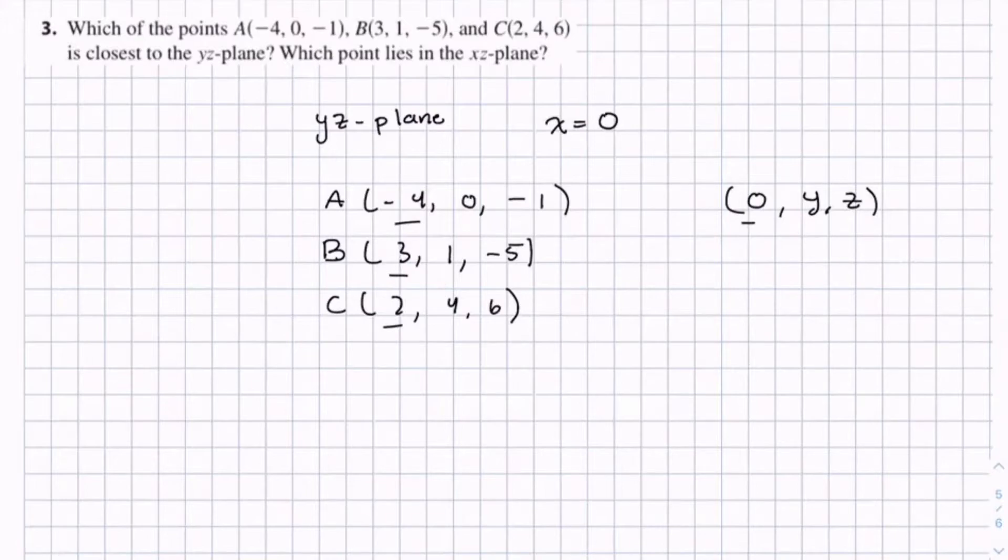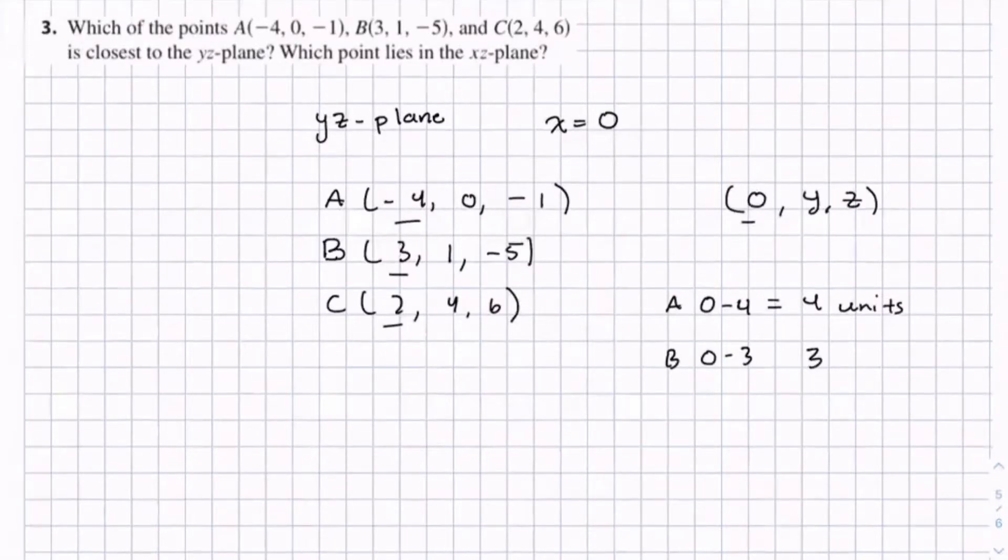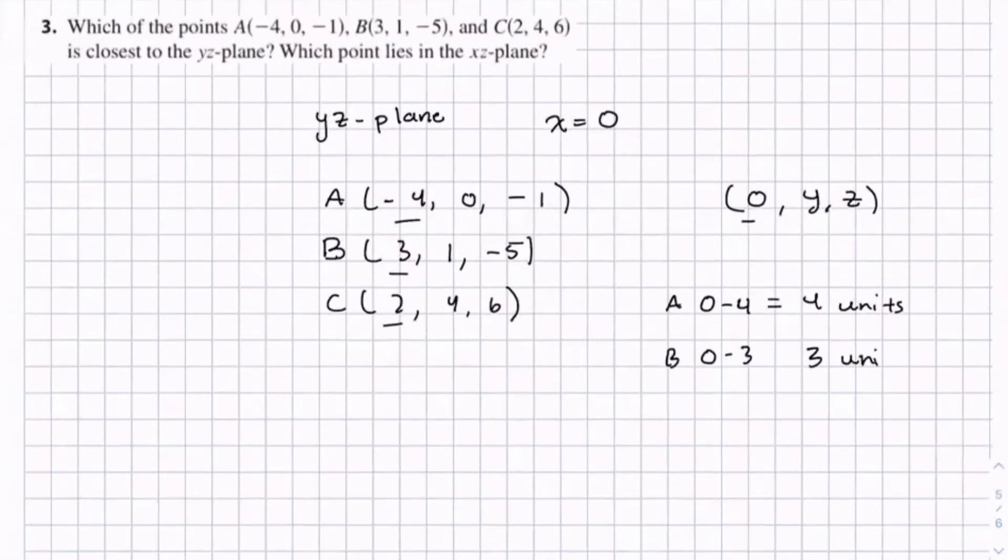So for A, we can see it's 0 minus -4, which is 4. So that's 4 units away for A. For B, 0 minus 3, which is 3 units away. And then for C, it's 0 minus 2, which is 2 units away. So we can say that point C is closest to the yz-plane.